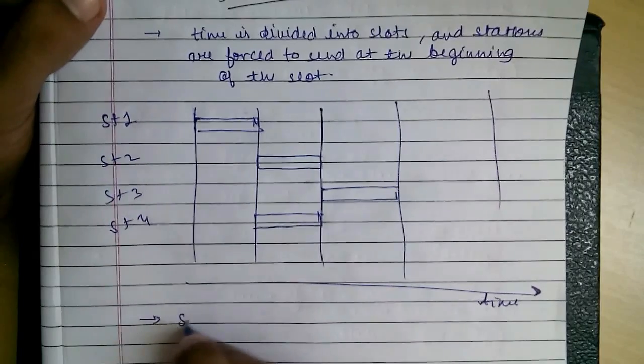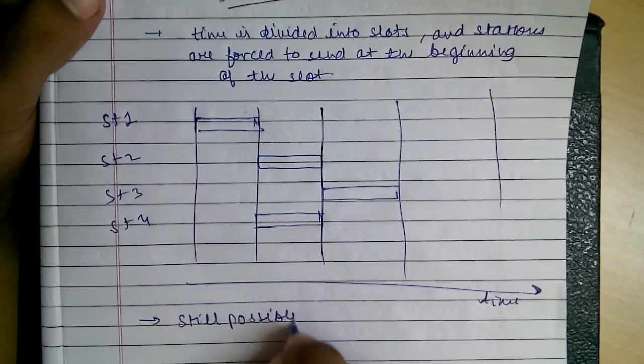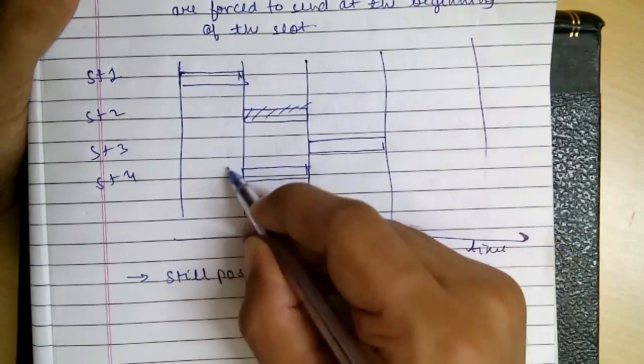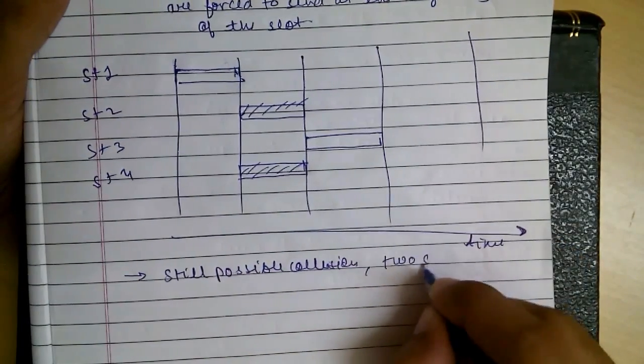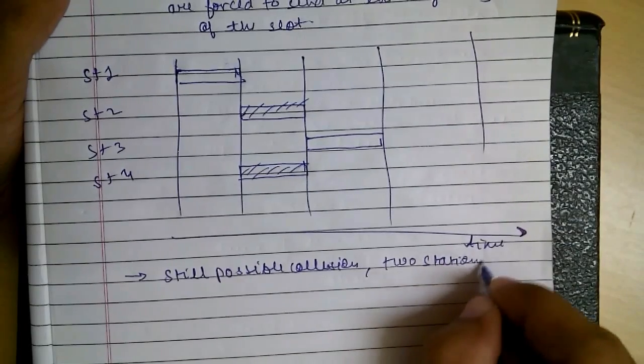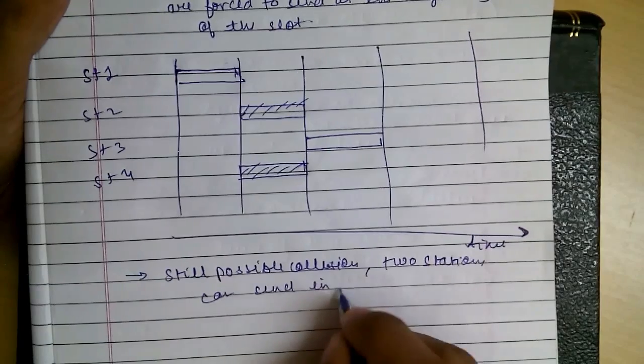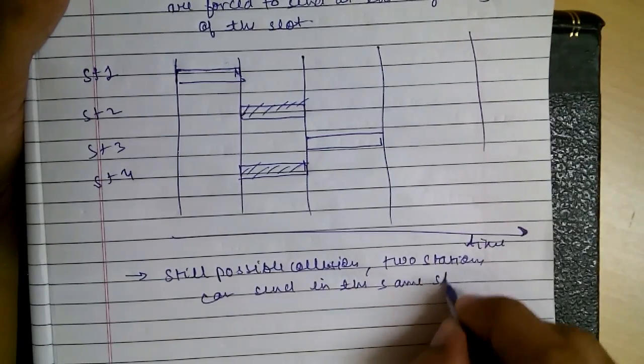But still, possible collisions are there. As you can see in this, as two stations can send in the same slot.